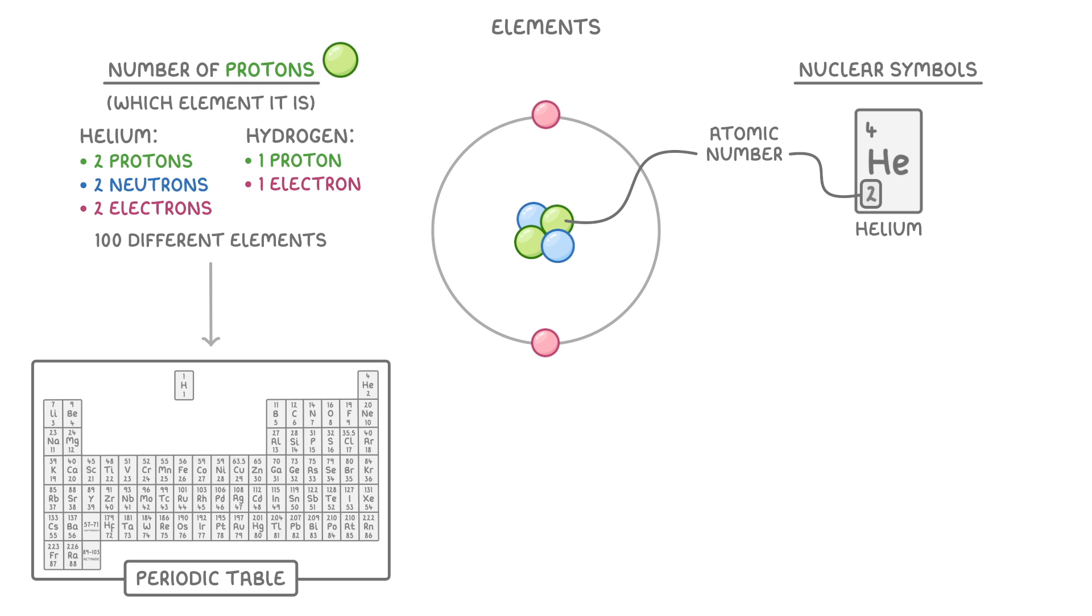And any atom with that many protons must be that element. So our atom here, which has two protons, must be helium, because helium's atomic number is two. Or if we take carbon, we can see that its atomic number is six, so all carbon atoms have six protons.